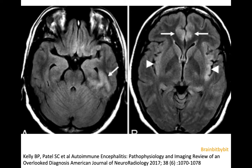Limbic encephalitis can be autoimmune, and in this case of a 32-year-old woman the antibodies are targeted against the NMDA glutamate receptor. You can see pronounced FLAIR hyperintensity in the sub-insular region, in the cingulate, and in the mesial temporal lobe, more than the normal hyperintensity of the limbic structures.